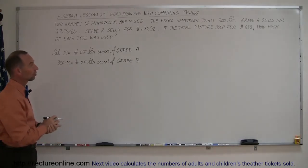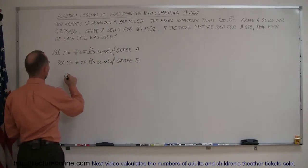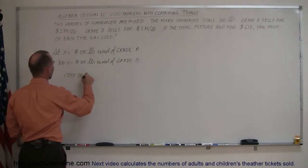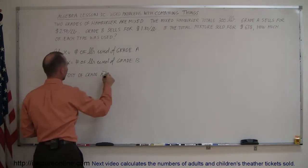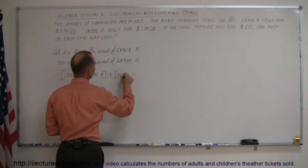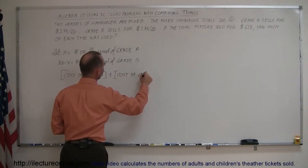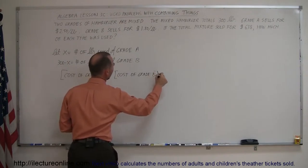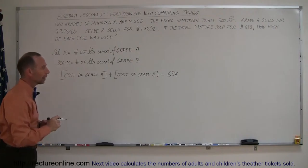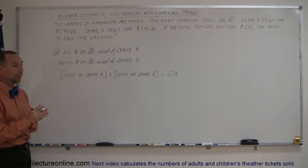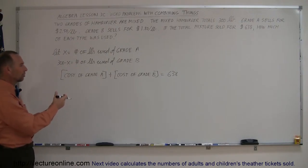Now they tell us that the total mixture sold for $638. So, the cost of the grade A hamburger plus the cost of the grade B hamburger totals up to $638. Now, how do you figure out the cost for the grade A hamburger? Well, the price per pound times the number of pounds. So, for each pound it costs this much, and you multiply it times the number of pounds, that gives you the total cost for grade A.